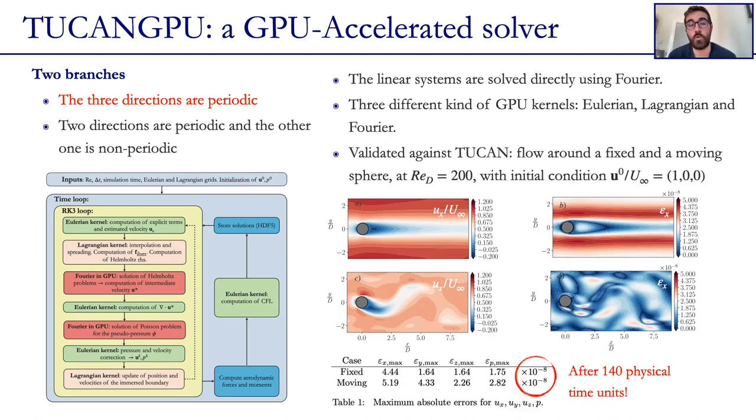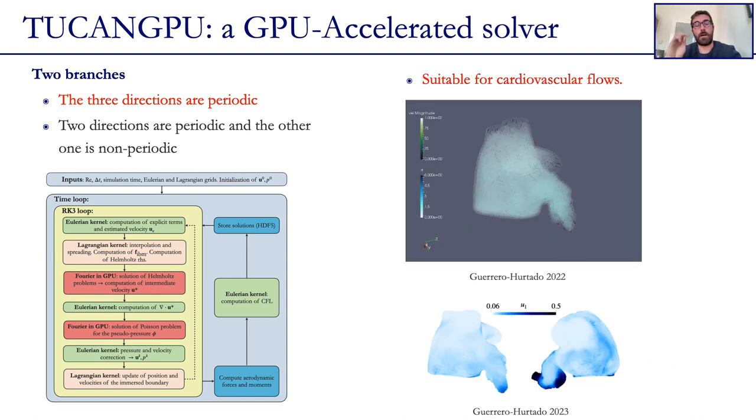As for the validation against Tukan, basically we have chosen the flow around a fixed and a moving sphere at Reynolds 200 as a validation case with initial condition u'/U∞ = (1,0,0). And we show here some flow snapshots of streamwise velocity and absolute error between Tukan and Tukan GPU. And also a table in which we show the maximum absolute errors, which as you see are of the order of magnitude of 10 to the power of minus 8. Considering that our problem is of order one, this means that we have been completely validated. It has to be remarked as well that this branch is very useful and suitable for cardiovascular flows and that we have already run several simulations using the GPU code.